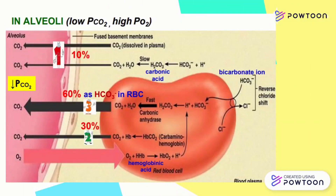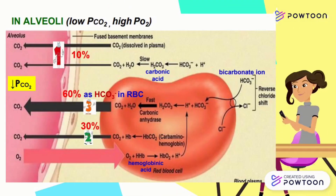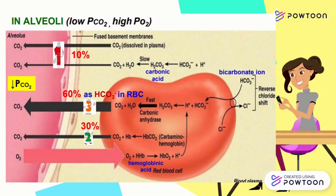While in alveoli, the carbon dioxide dissolved in plasma will diffuse out to the alveolus. The H₂CO₃ will also convert back to carbon dioxide in a reversible direction and go to the alveolus. For the 30% of carbon dioxide, the carbaminohemoglobin will dissociate to form hemoglobin and carbon dioxide before transport to alveolus.